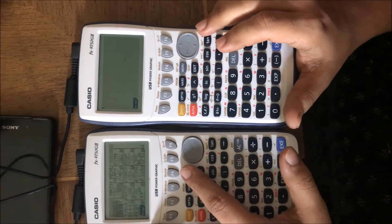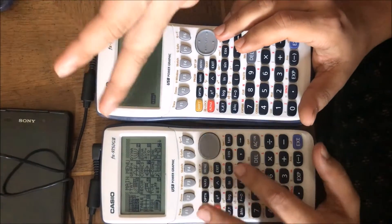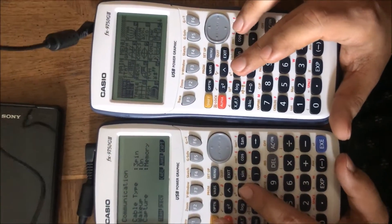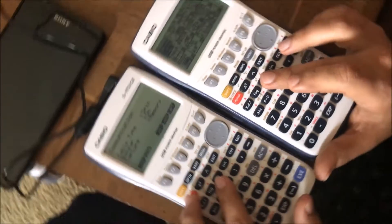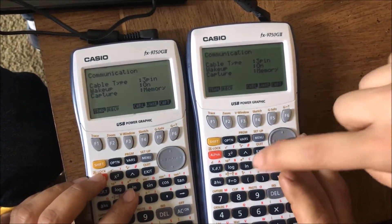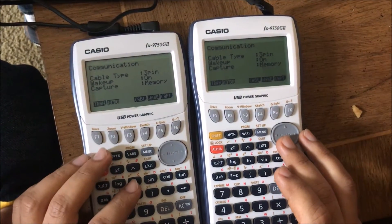Okay, this is Casio FX 9750 GII, and that's the same calculator. And this is the cable which is used to connect the two calculators. To transfer programs, first you need to go to the menu and then click C, so that will lead you to the link program.